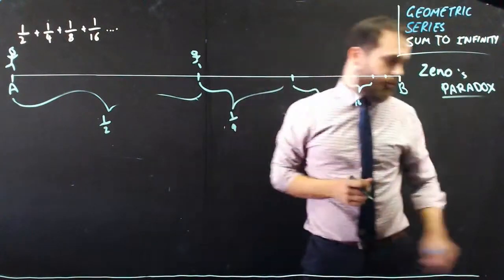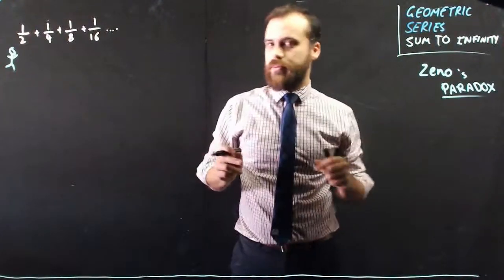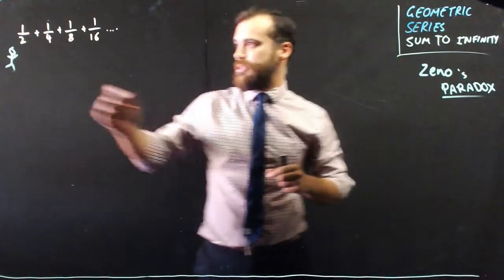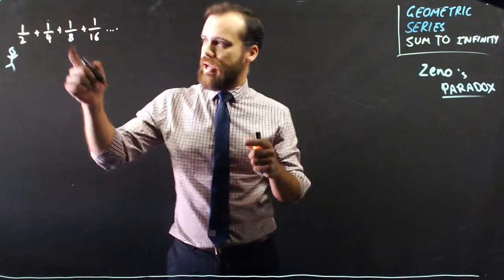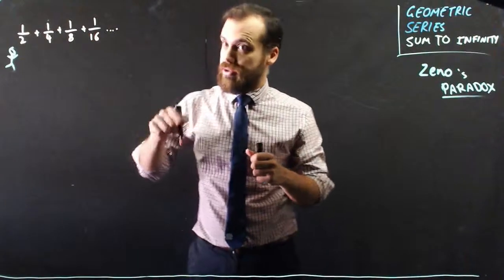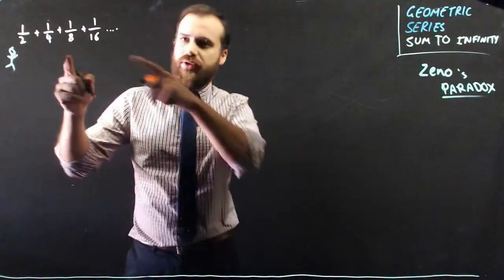Now, we can resolve the paradox. So you should be able to pick up that Zeno's run from point A to point B is a geometric series, starting at one-half of the distance, adding one-quarter to the distance, adding one-eighth, adding one-sixteenth to the distance. And we know that if we add all of those together...